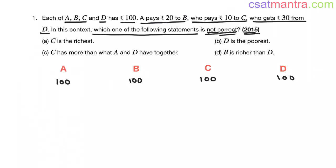Now, we have four people: A, B, C and D. Each of them have 100 rupees initially. It is said that A pays 20 rupees to B. In that case, A will be having 80 rupees and B will be having 120 rupees. 100 plus 20 rupees equals 120.